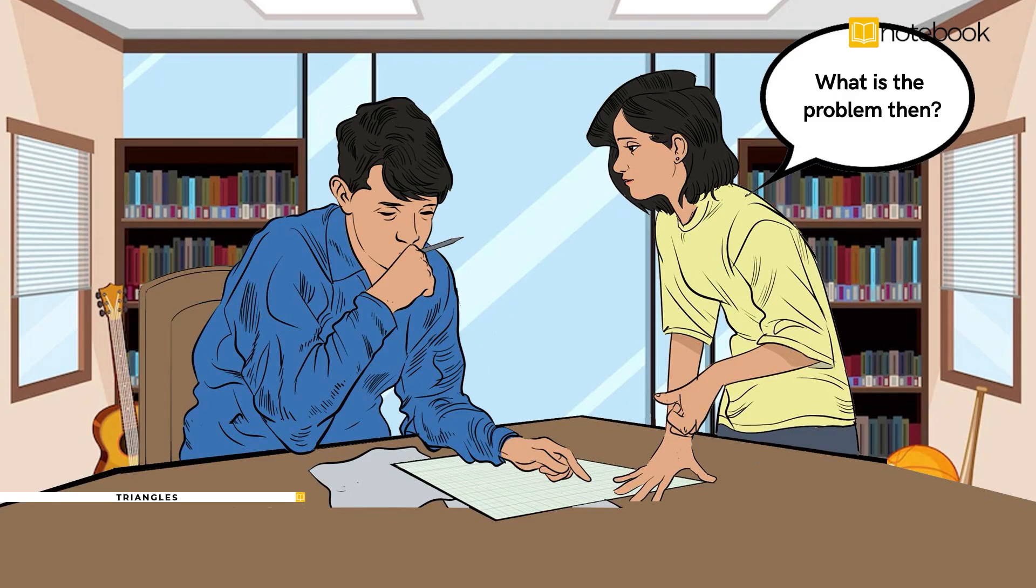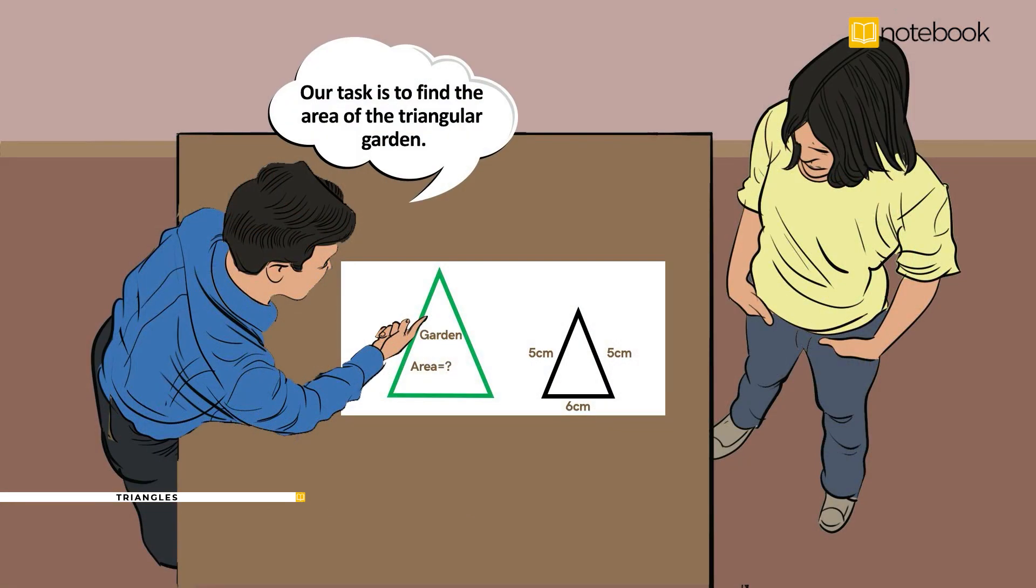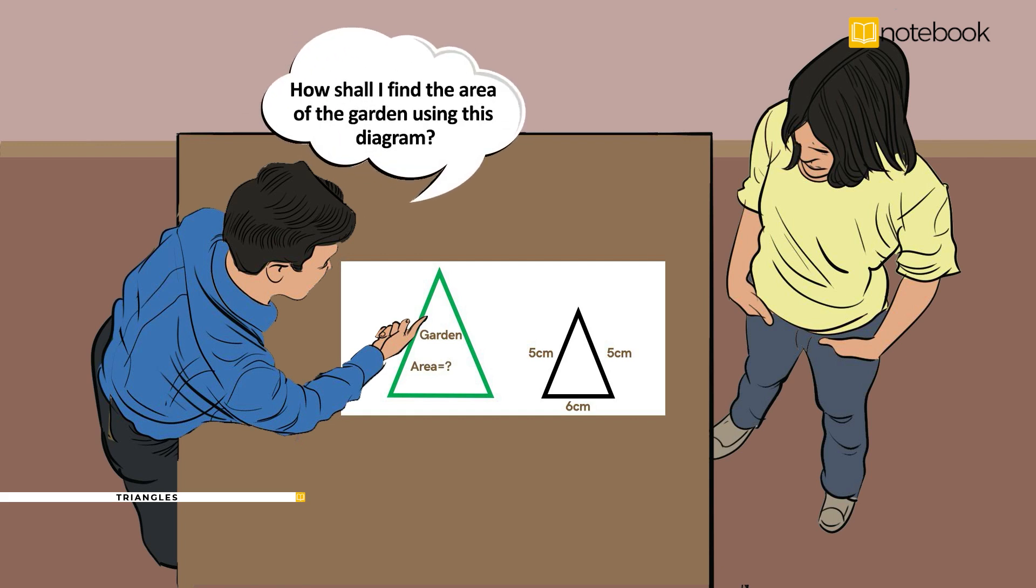What is the problem then? Our task is to find the area of the triangular garden. But I have measured only one side of the garden. How shall I find the area of the garden using this diagram?